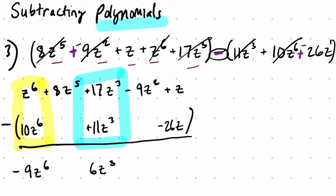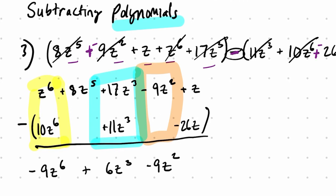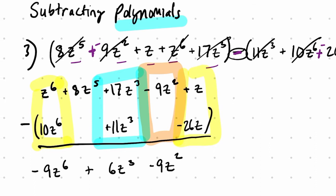And then, circle the next one. We have negative 9 groups of z squared. We're not taking anything away, so that's still just negative 9 times z squared. And then finally, we have z. And then we're taking away negative 26 groups. So it's 1 minus negative 26. Remember, 1 minus negative 26 is really 1 plus 26. It's really 27. And that's our answer.